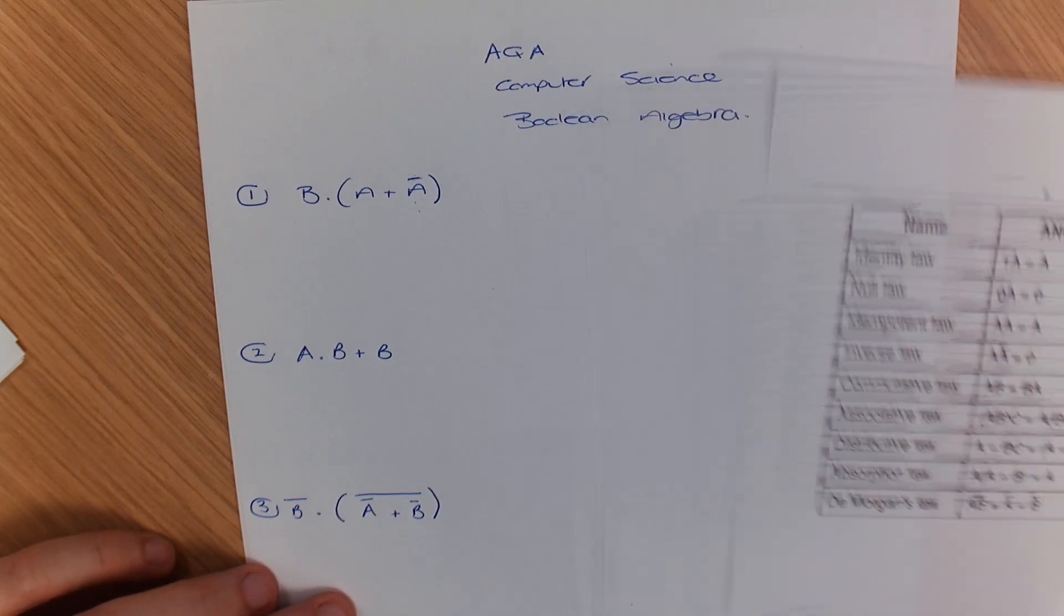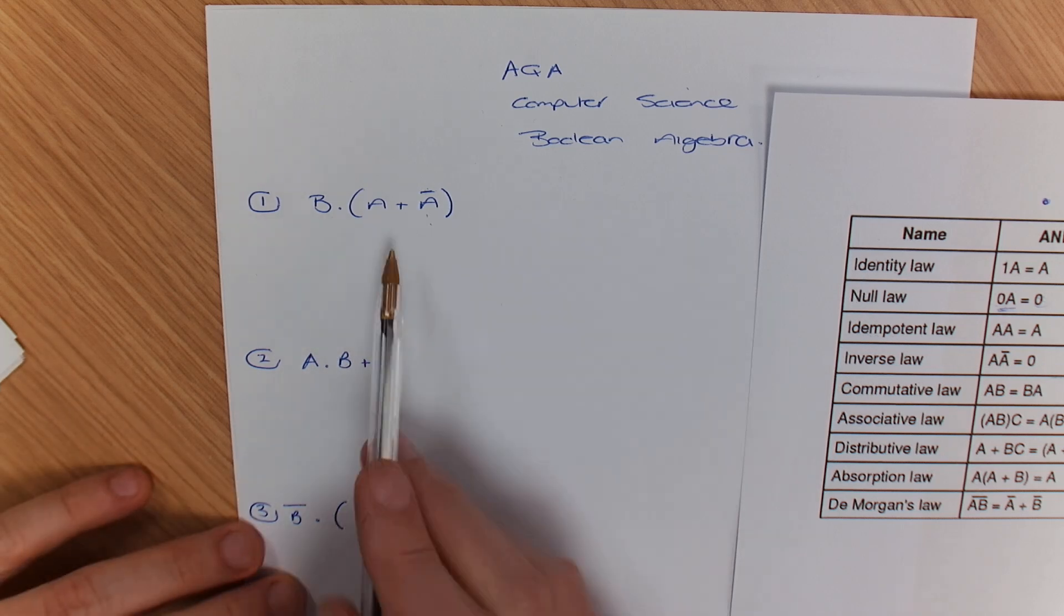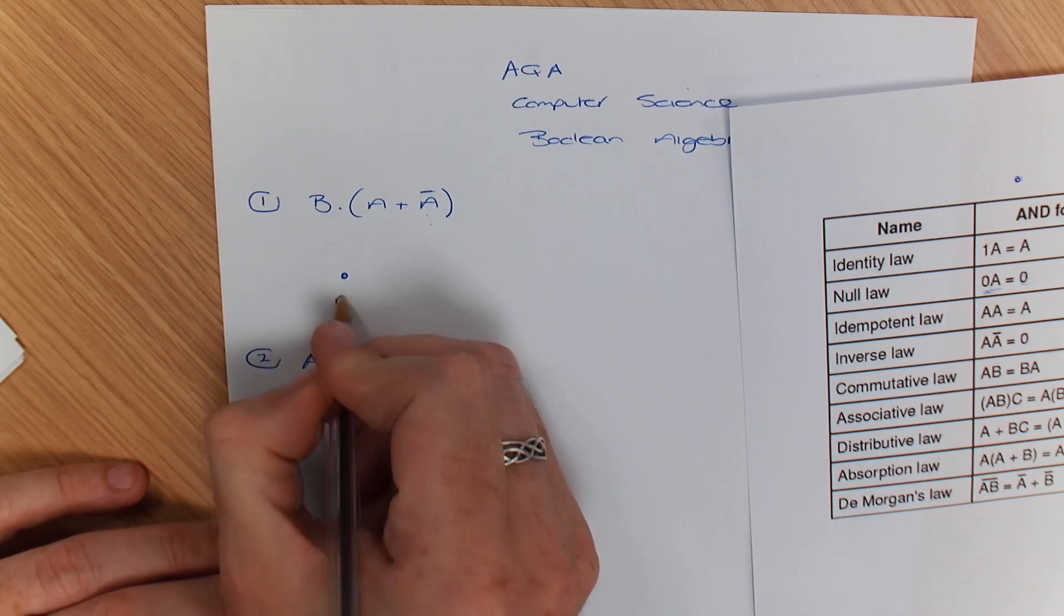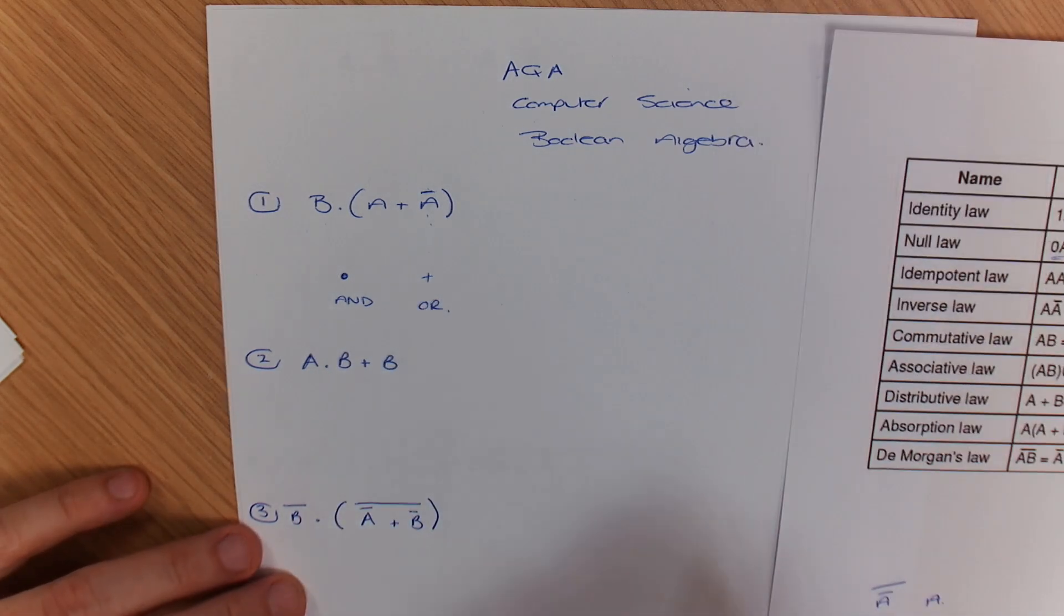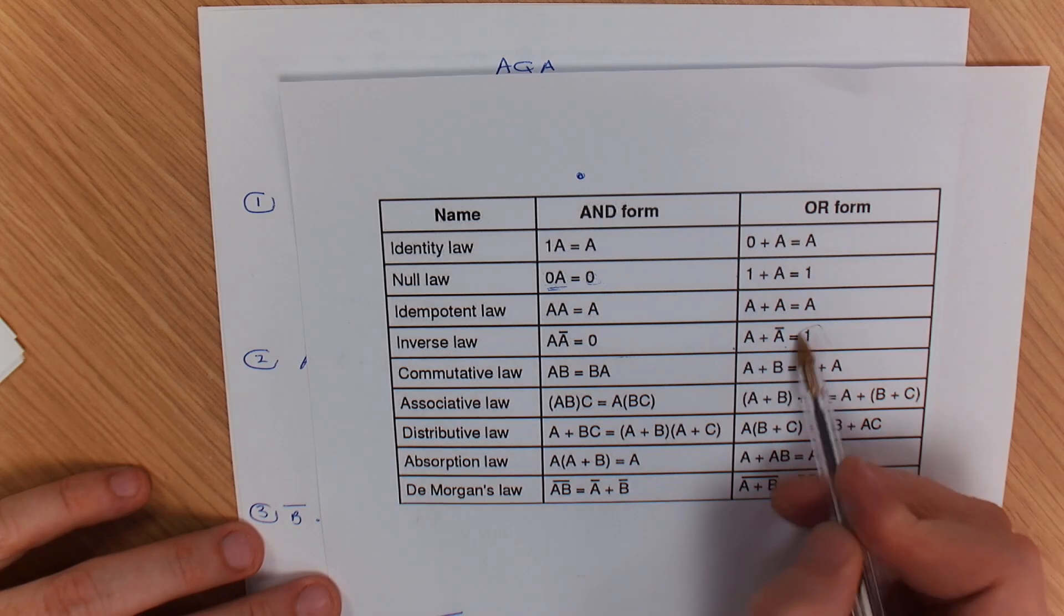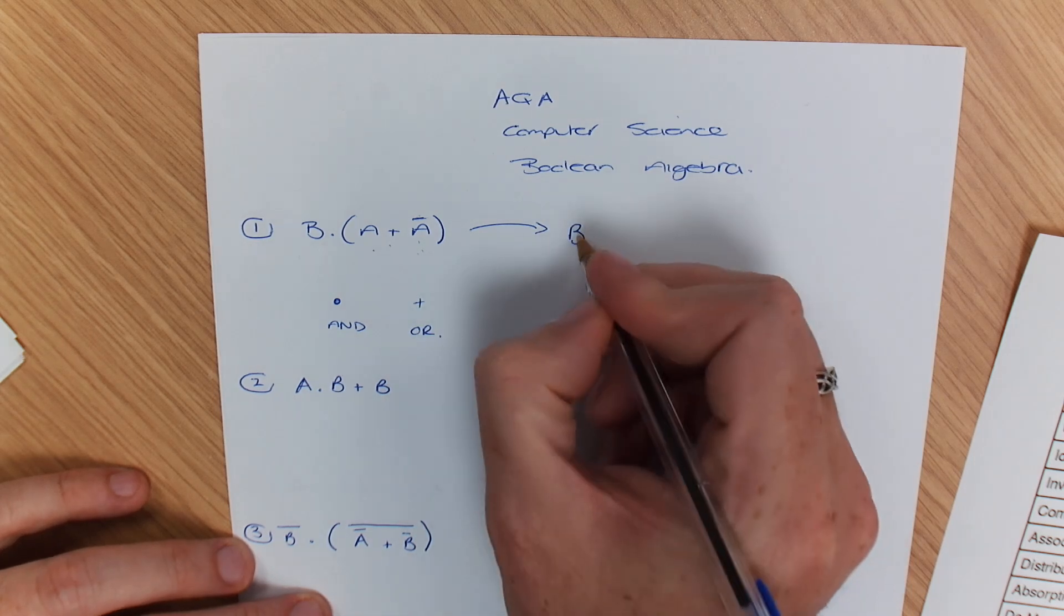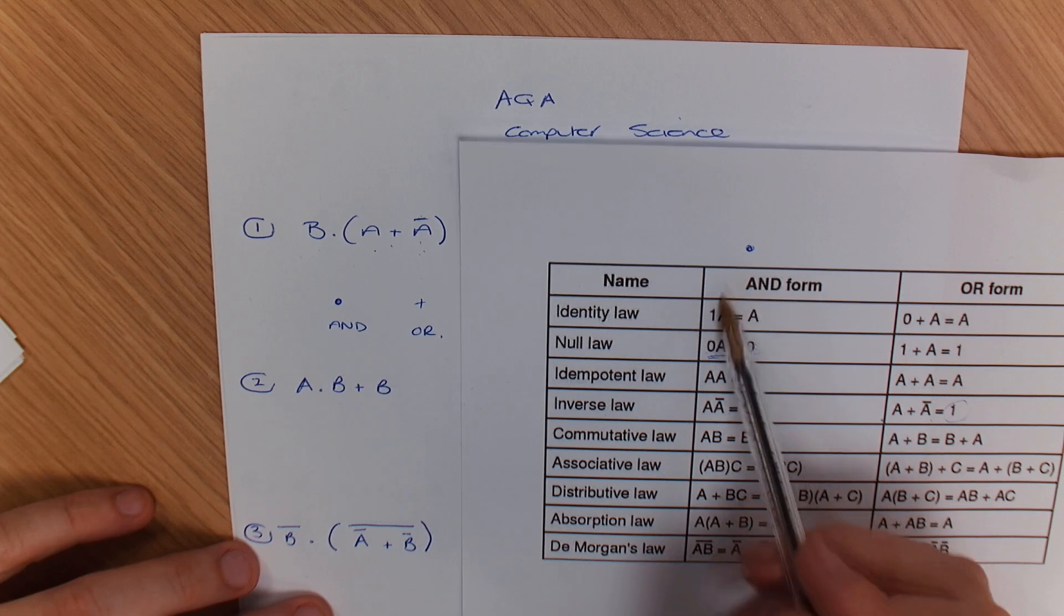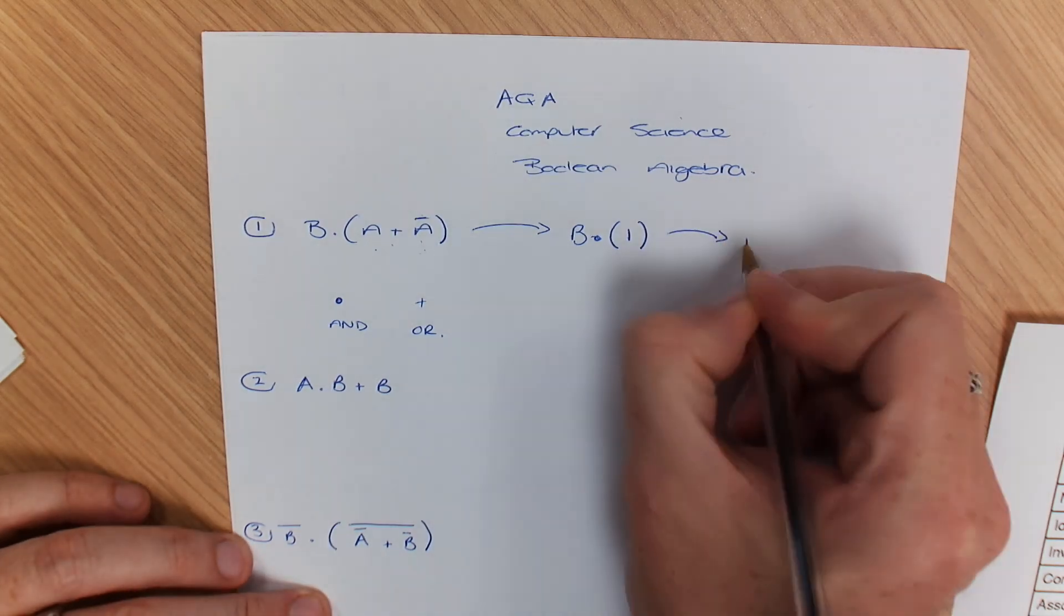What we've got here is one of our first simpler questions. We've got B and dot means and, plus means or. When we have A or not A, if you refer back to the rules, A or not A is equivalent to 1. So if I move this over here, I've now got B and 1. Looking at our rules again, B and 1 is equivalent to B. So simplifying that, I now end up with B.